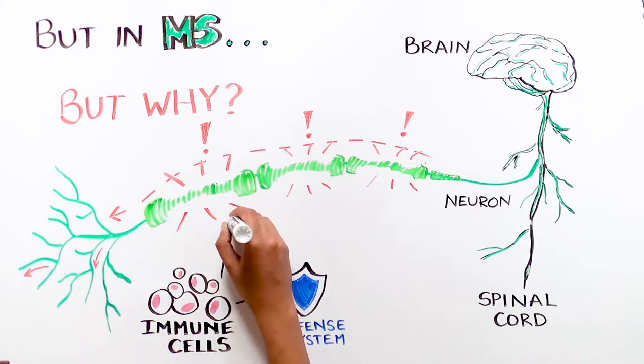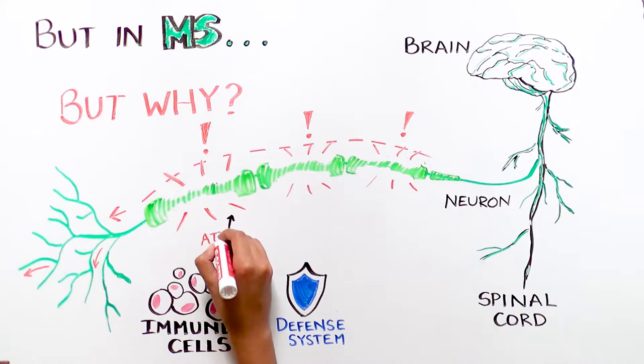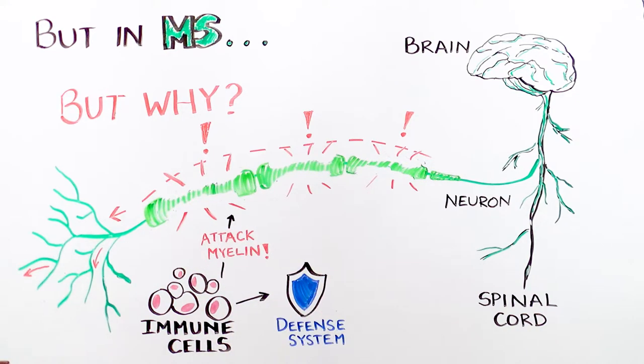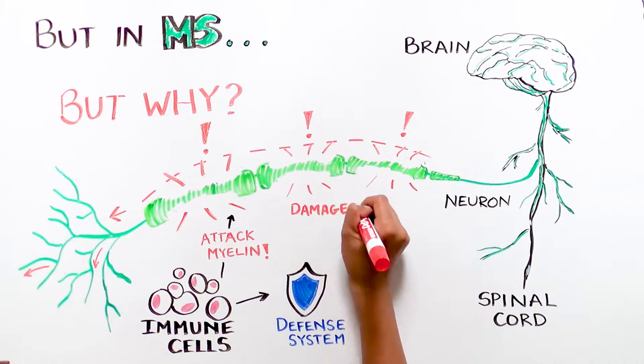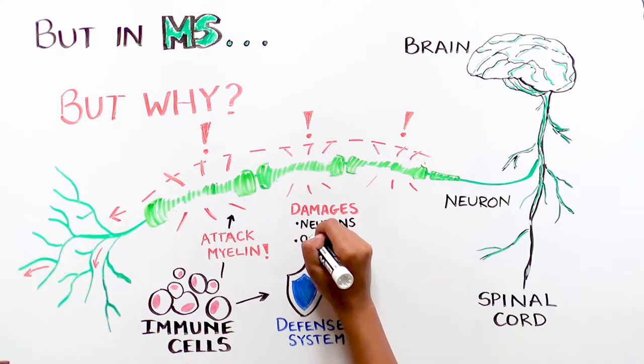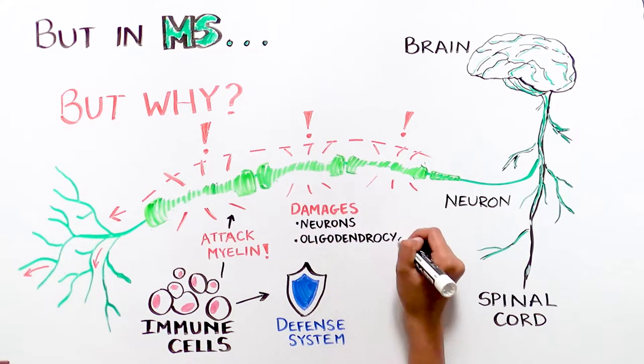in MS, immune cells go awry and instead of attacking foreign pathogens, they begin attacking the protective myelin that surrounds the nerves. This eventually damages both the neurons themselves and the cells that produce myelin, which are called oligodendrocytes.